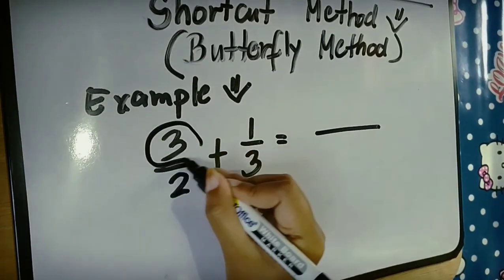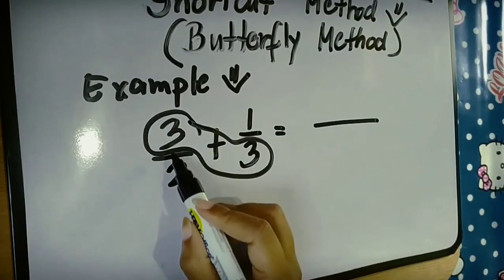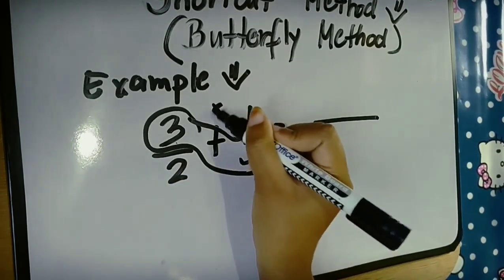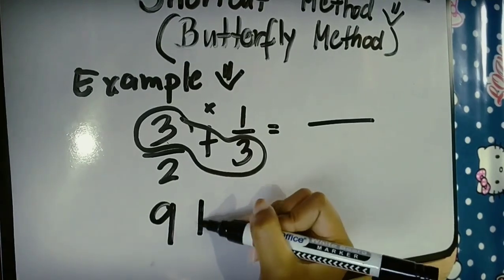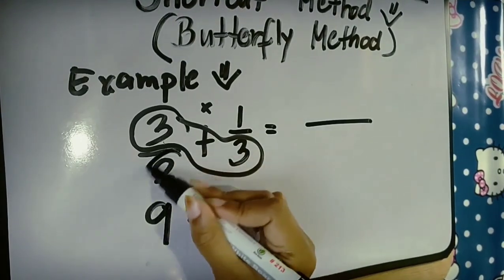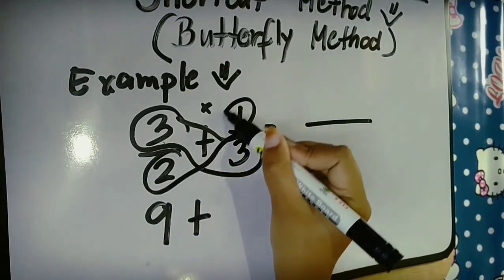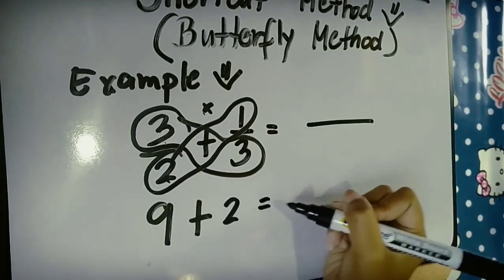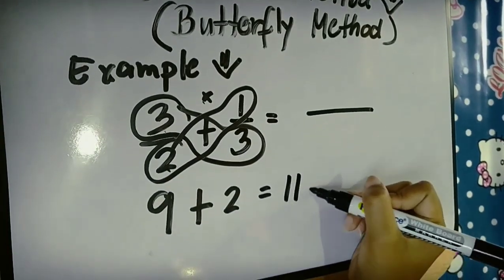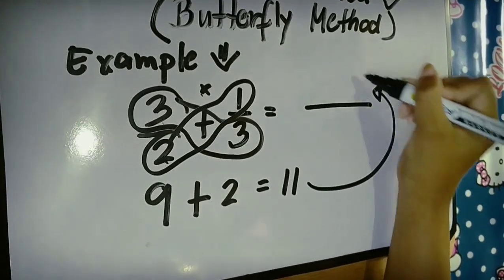The first thing to do is cross multiply. 3 times 3, the answer is 9. Then copy the plus sign and 2 times 1, the answer is 2. So 9 plus 2, the answer is 11 and that 11 will be our numerator.